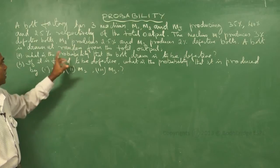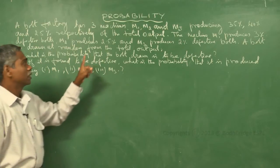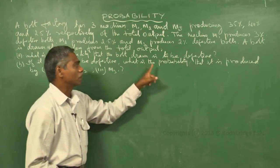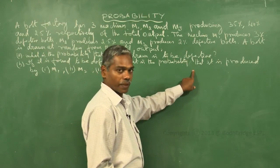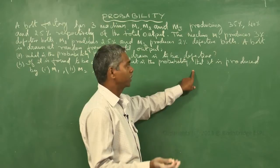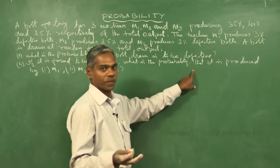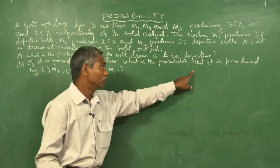The first question is: what is the probability that the bolt drawn is defective? It may be defective or perfect — non-defective.